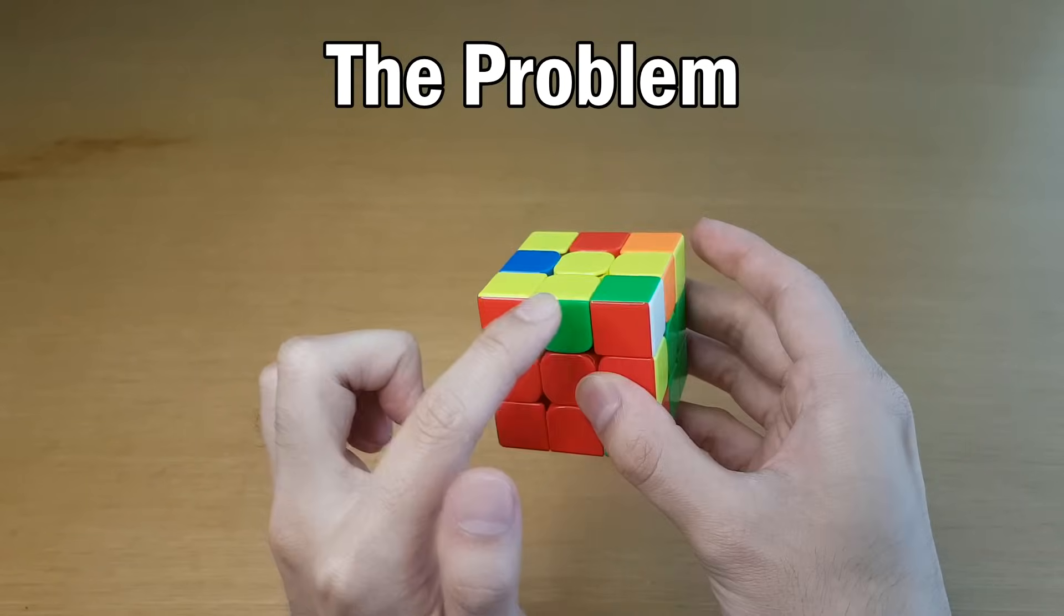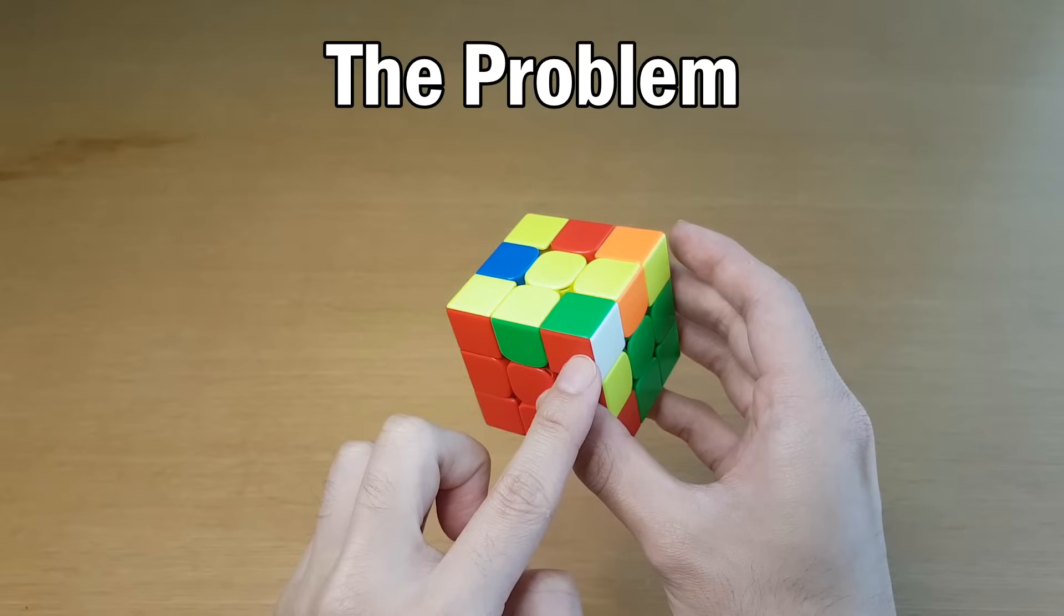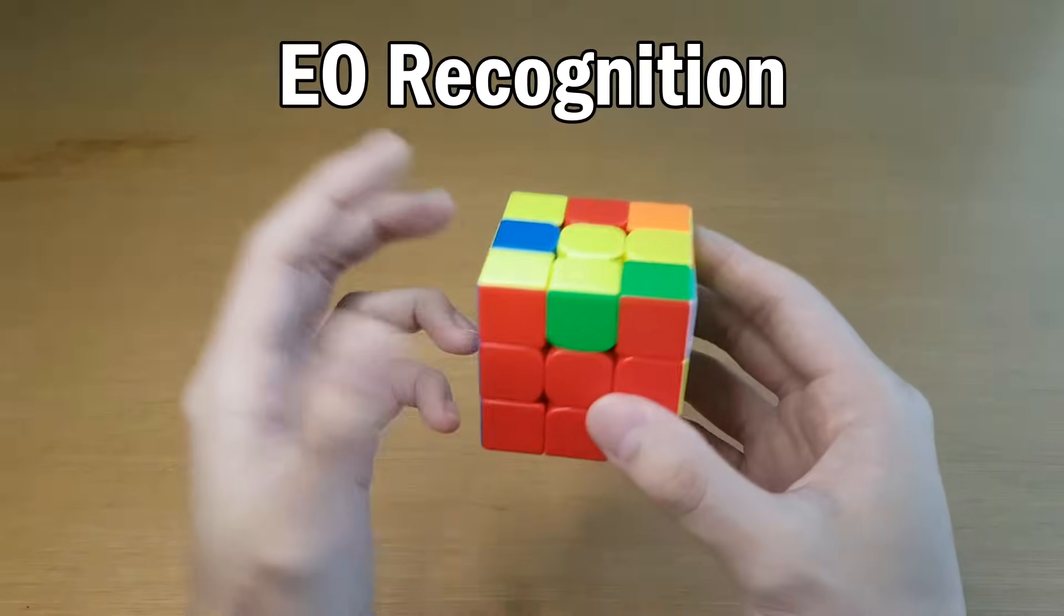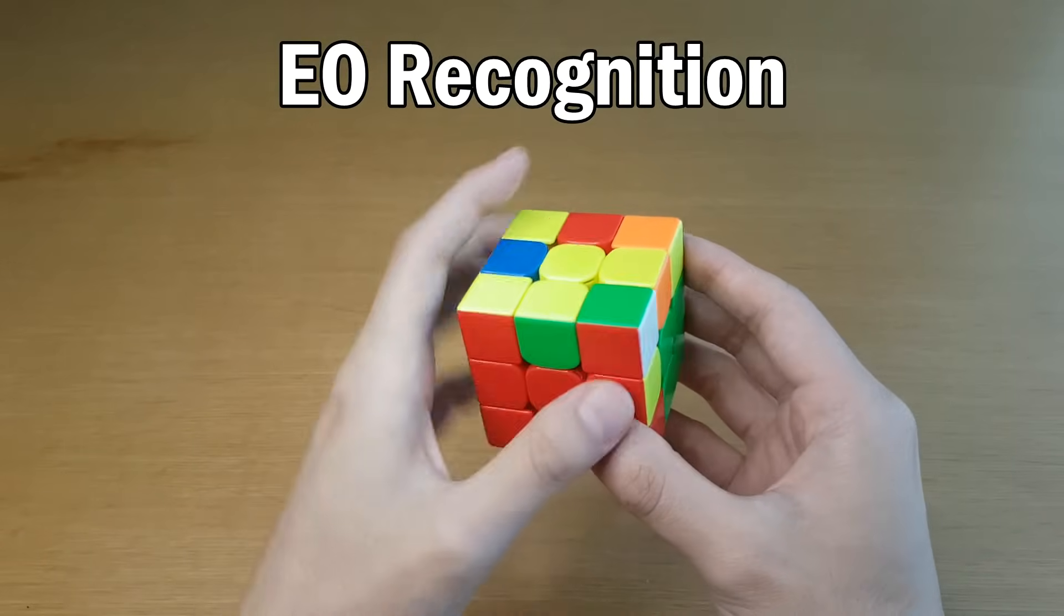Wait, where was the red on the corner? Okay, it was here. And you see how you're looking back and forth between them. That is what's causing you to pause on this case. With EO, you never have to compare between the corner and the edge.